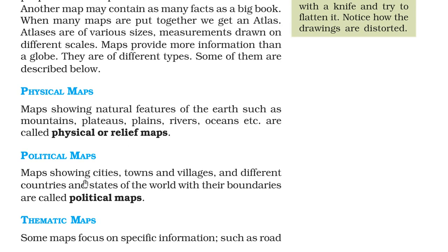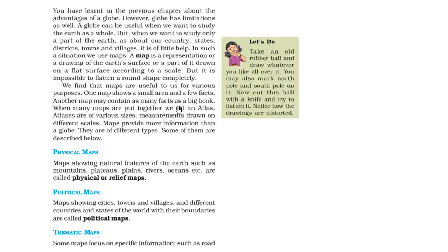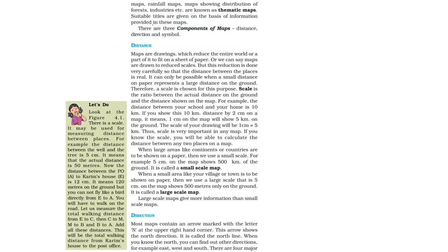Then we have political maps. These are maps which show cities, towns, villages and different countries and states of the world with their boundaries. These are known as political maps. Then there are thematic maps. Some maps focus on specific information such as road maps only showing roads, or rainfall maps depicting rainfall in a particular area, or maps showing distribution of forests and industries. These are known as thematic maps because they are based on certain themes. Suitable titles are given on the basis of information provided in these maps.